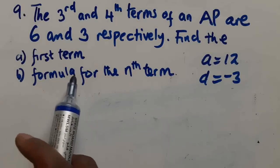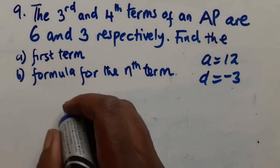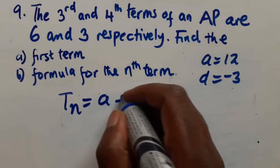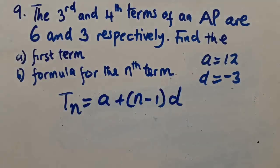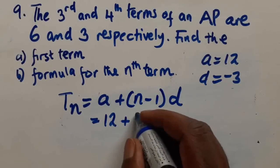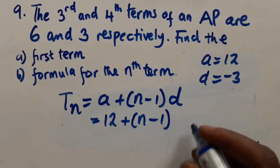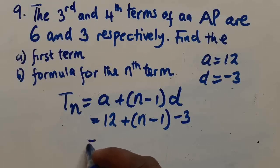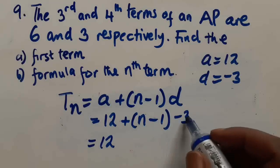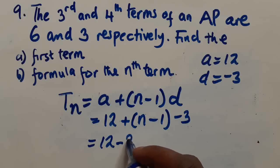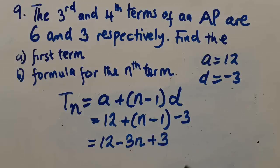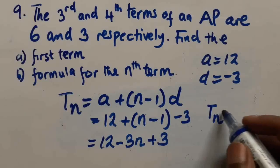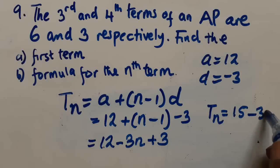For the nth term formula, we substitute a = 12 and d = -3 into Tn = a + (n-1)d. Distributing gives 12 + (-3n + 3), so putting like terms together: Tn = 15 - 3n. That is the nth term formula.